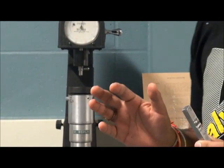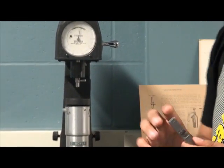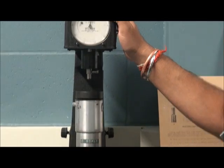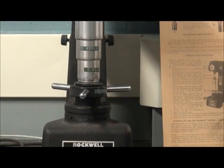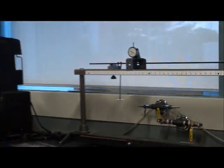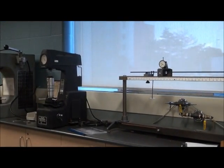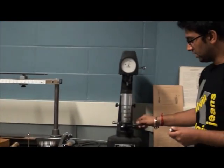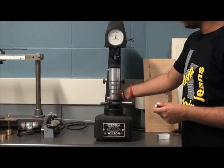To measure the hardness of this sample, we are using the Rockwell hardness scale. This is the B scale, and on this side we have a scale for the C scale. And this is the proper indenter.